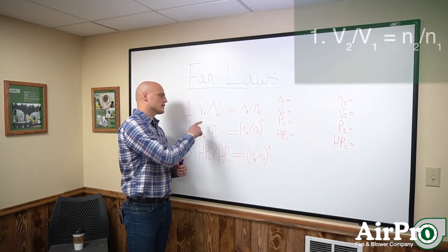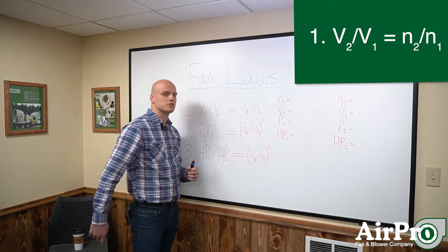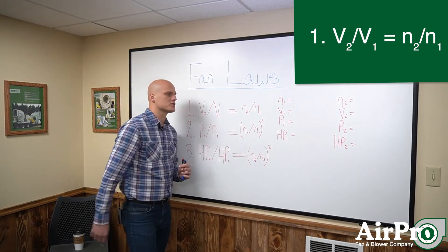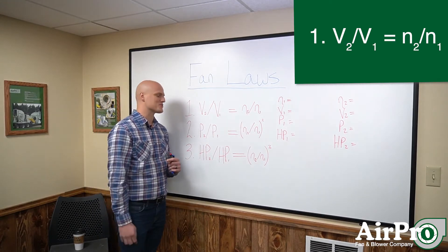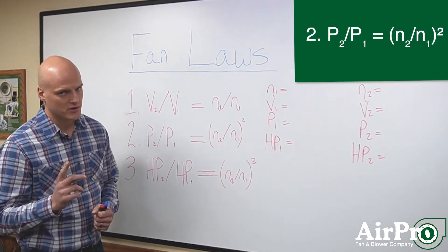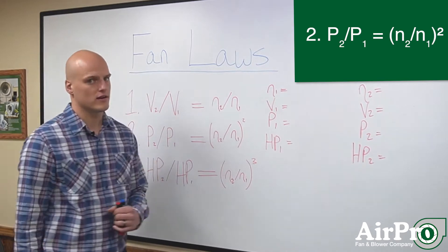The first law is that your volume is going to change proportional to your speed change. So V2 over V1 equals n2 over n1. The second law is that your pressure is actually going to change proportional with the square of the speed change.